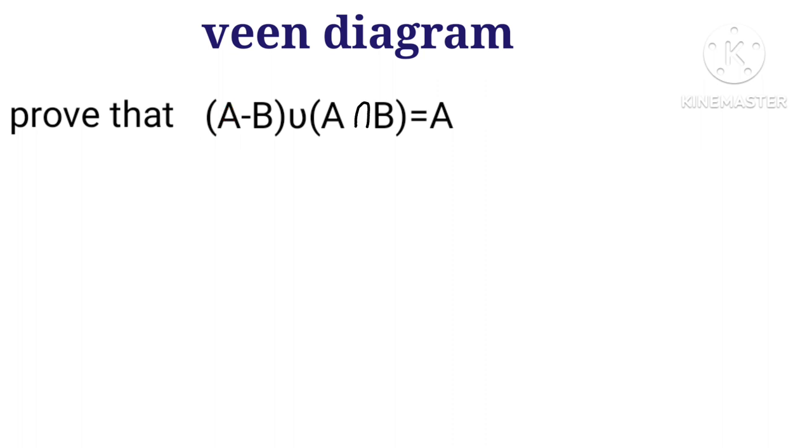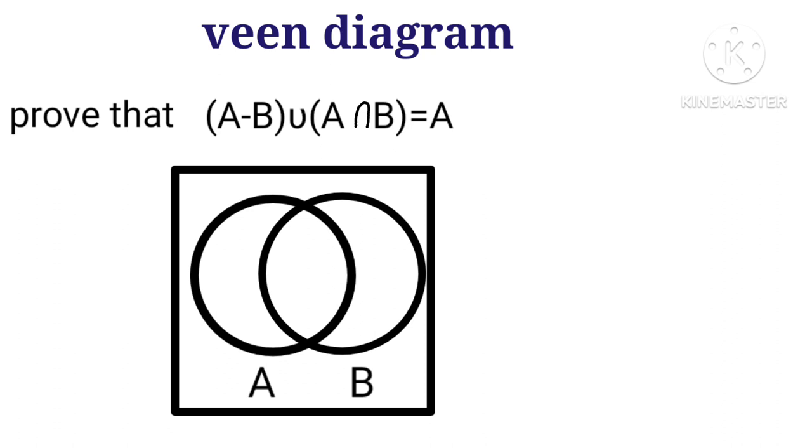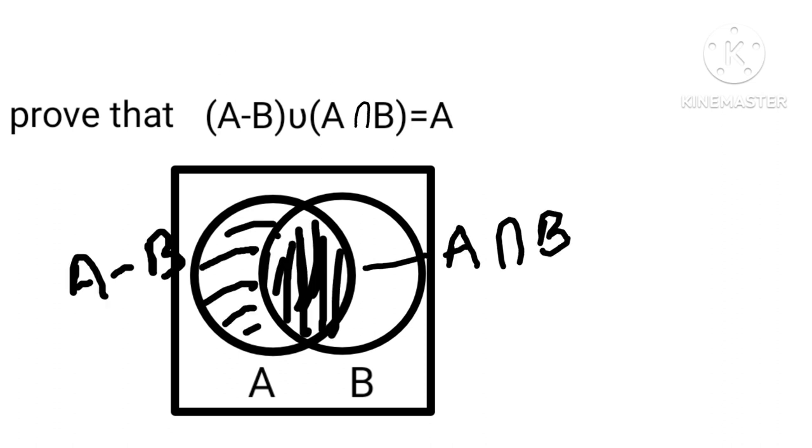Here we draw a Venn diagram of left hand side. This region is A minus B and this region is A intersection B. What we see is both the regions are involved in A. Hence, A minus B union A intersection B equals A.